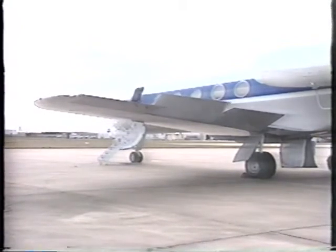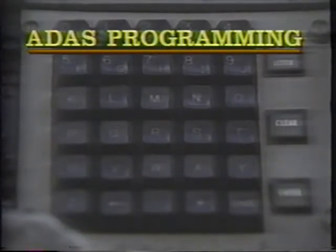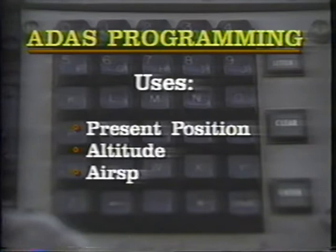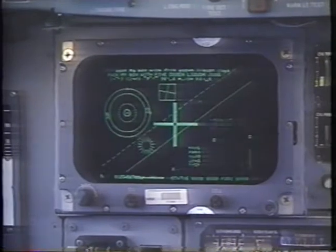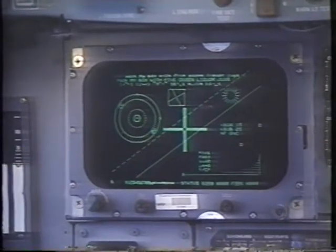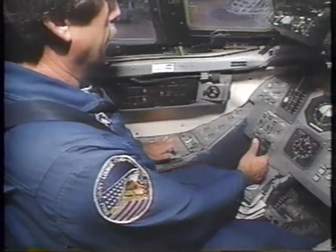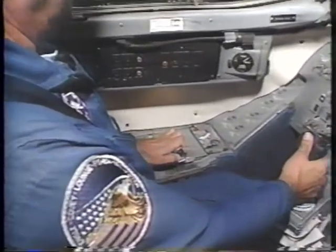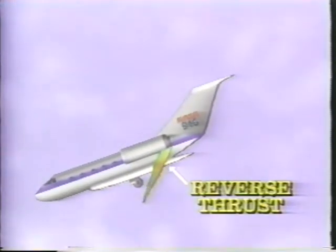ADAS then checks the aircraft to verify those movements. If a correction is called for, ADAS makes the adjustment within milliseconds. The ADAS is also programmed with information about runway locations. Data such as present position, altitude, and airspeed are continuously updated and used to calculate the approach and landing path to the runway. There is also a multifunctional CRT display system called the MCDS. The MCDS displays vertical and horizontal situation data in the same manner it would appear on the orbiter's display monitors. To the astronaut's left is a speed brake thrust controller, which is linked to the ADAS computer. When the speed brake handle is moved, the ADAS is signaled to change the reverse thrust level, affecting drag and airspeed the same as the orbiter's speed brake.